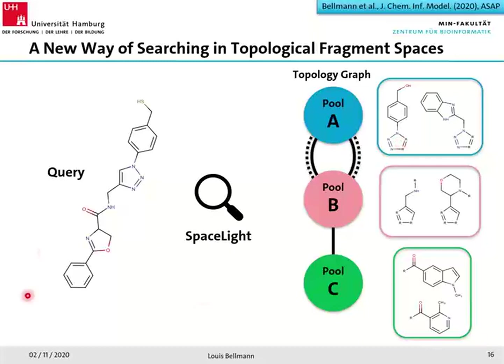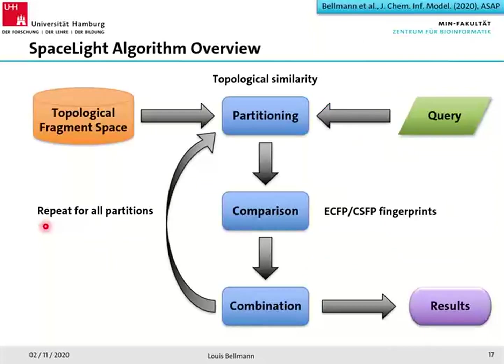Now we have a query compound and we want to search the space without enumerating all products. Here is the algorithm overview: we start with the topological fragment space and the query compound, then we generate partitions of the query compound into substructures, keeping track of topological similarities so the partitions could correspond to fragment combinations from the space.